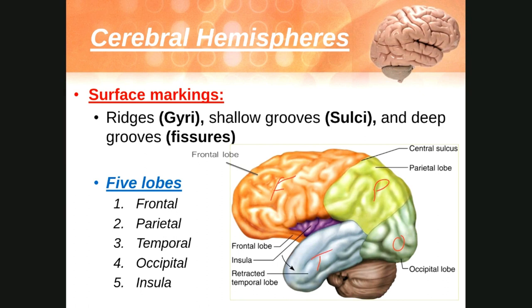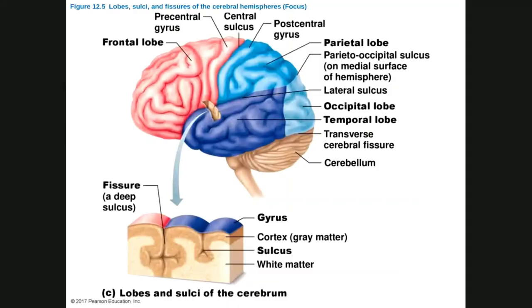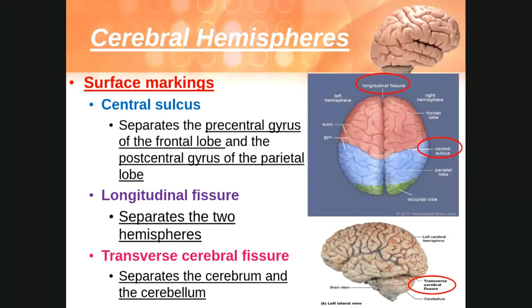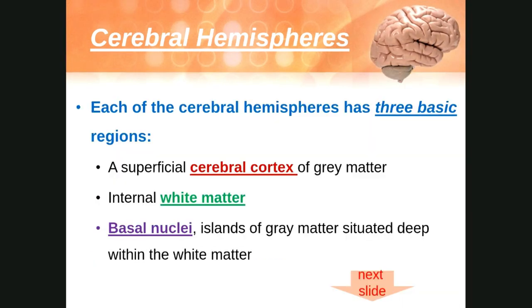In the cortex view: the central sulcus separates the frontal and parietal lobes, and the lateral sulcus separates the temporal and frontal lobes. The precentral gyrus and postcentral gyrus are both responsible for sensory and motor functions. The midline separates the right hemisphere from the left hemisphere.